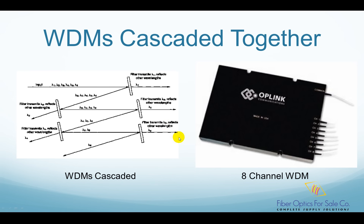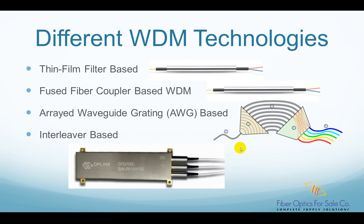In addition to thin film filter-based WDMs, there are also fused fiber-based WDMs, arrayed waveguide grating-based WDMs, and interleaver-based WDMs, among others. They use different mechanics to separate the colored lights.